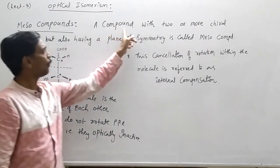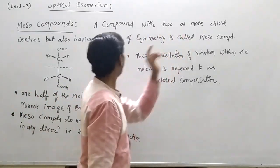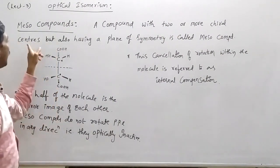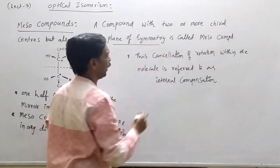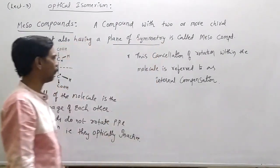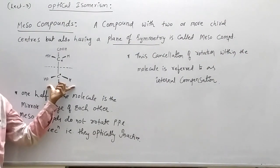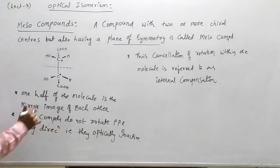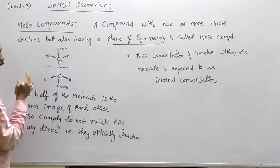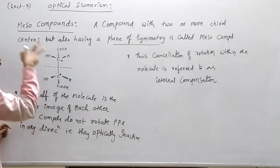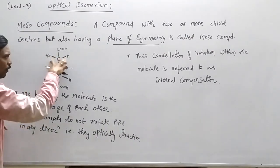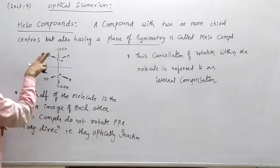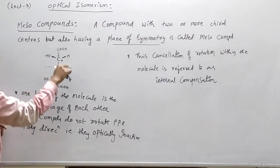Meso compounds: a compound with two or more chiral centers but also having a plane of symmetry is called as meso compound. If you have taken tartaric acid, there are two chiral centers. If you cut these two chiral centers, then the mirror image structure will be made. In that the plane of symmetry is present.